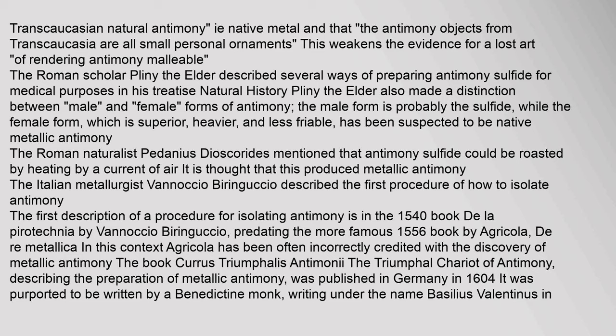The Roman scholar Pliny the Elder described several ways of preparing antimony sulfide for medical purposes in his Natural History. He also distinguished between male and female forms — the male is probably the sulfide, while the female form, which is superior, heavier, and less friable, is suspected to be native metallic antimony. The Roman naturalist Dioscorides mentioned that antimony sulfide could be roasted by heating in a current of air, producing metallic antimony. The first procedure for isolating antimony is described in the 1540 book De La Pyrotechnia by Vannoccio Biringuccio, predating Agricola's 1556 De Re Metallica. The book Currus Triomphalis Antimonii, describing the preparation of metallic antimony, was published in Germany in 1604, purportedly written by the Benedictine monk Basilius Valentinus.